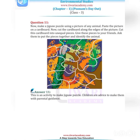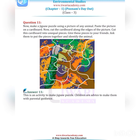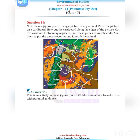Activity: Make a jigsaw puzzle using a picture of any animal. Paste the picture on a cardboard. Cut the cardboard along the edges of the picture, then cut the cardboard into unequal pieces. Give these pieces to your friends and ask them to put the pieces together and identify the animal.